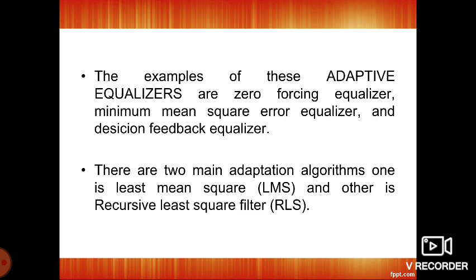The examples of adaptive equalizers are the zero-forcing equalizer, the minimum mean square error equalizer, and the decision feedback equalizer. The two main adaptation algorithms used are the Least Mean Square algorithm (LMS) and the Recursive Least Squares algorithm (RLS).